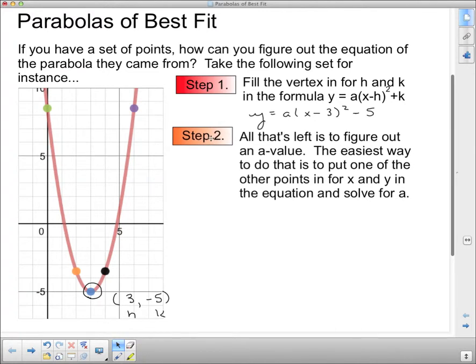Step 2 says all that's left to figure out is an a value. The easiest way to do that is to put one of the other points in for x and y in the equation and solve for a. So I'm going to pick this one here. That point looks like it's 6, 8.5. So now this is an x value and this is a y value. We're going to stick it in for x and y in this equation and then solve for a.